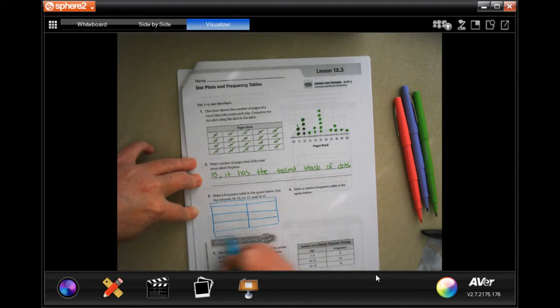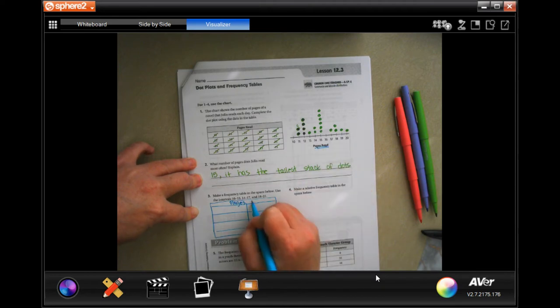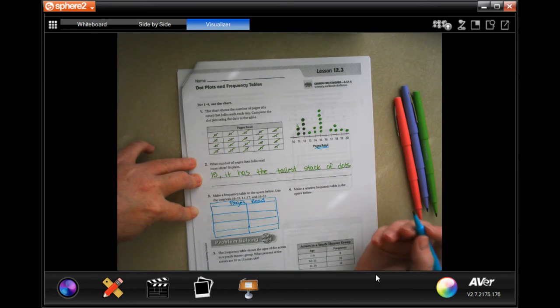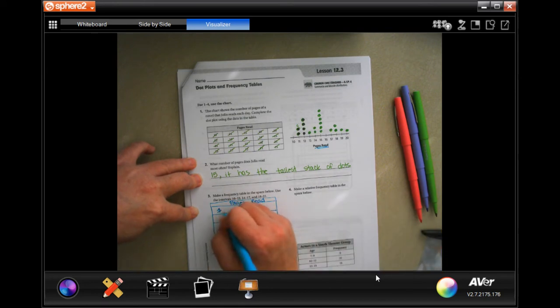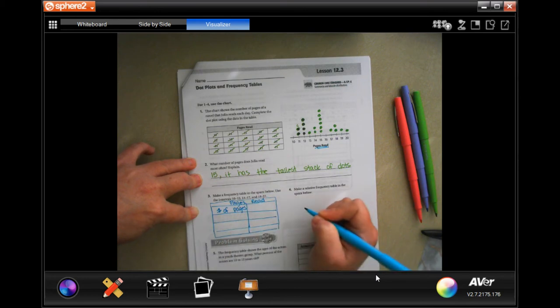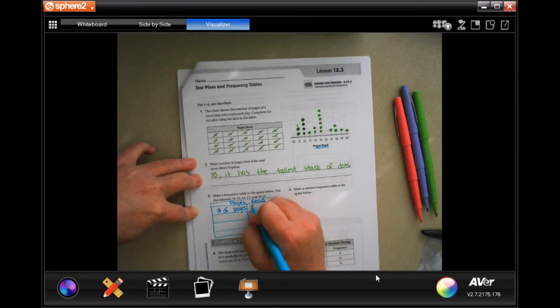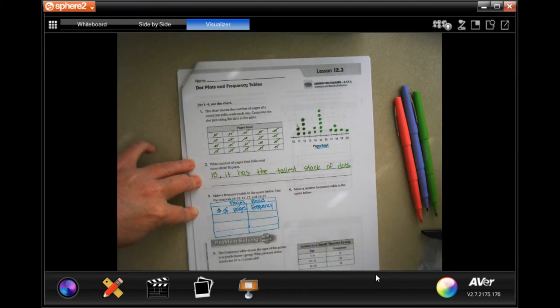Let's add one more on down here. Okay, so we're going to say that it's called pages read because that's what it says right here. And this one is going to be the number of pages, and this side is going to be frequency.